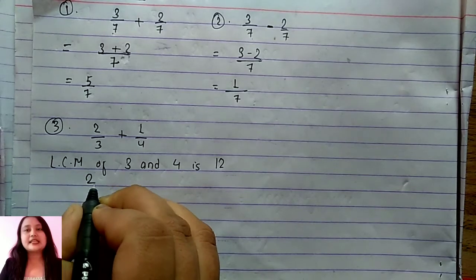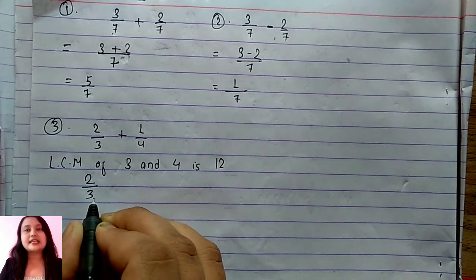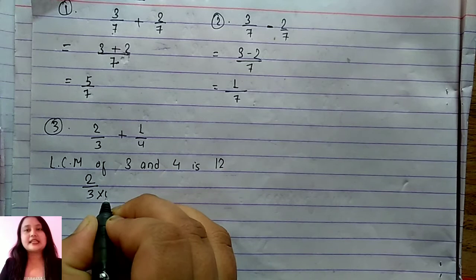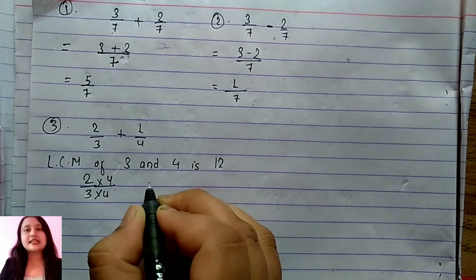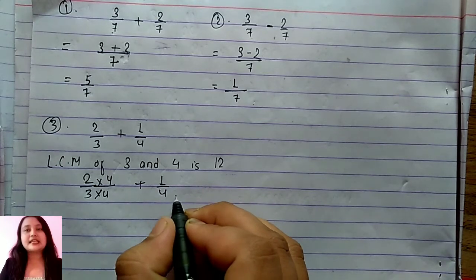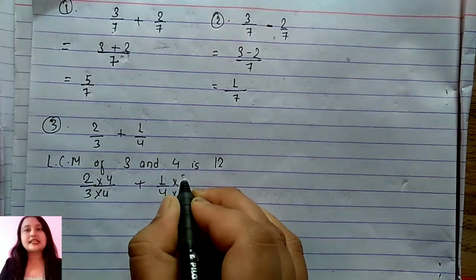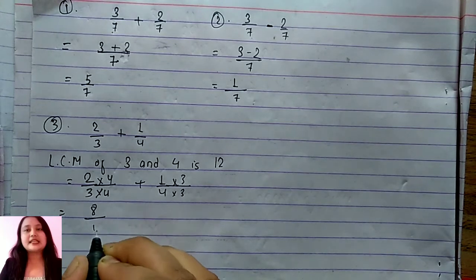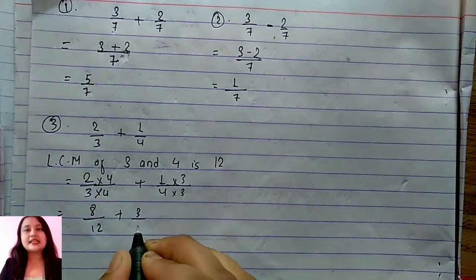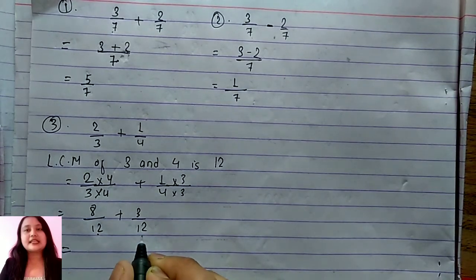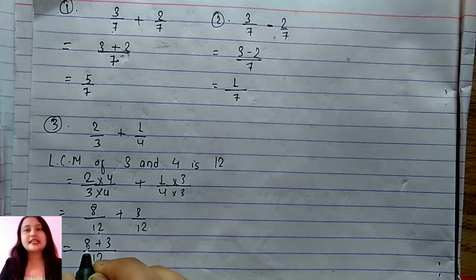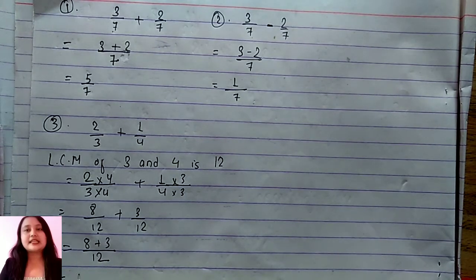Now we will make both denominators equal to 12. For 2 by 3, we multiply both numerator and denominator by 4, giving 8 by 12. For 1 by 4, we multiply both by 3, giving 3 by 12. Now both denominators are equal. We write the common denominator and add the numerators: 8 plus 3 equals 11. So the answer is 11 by 12.